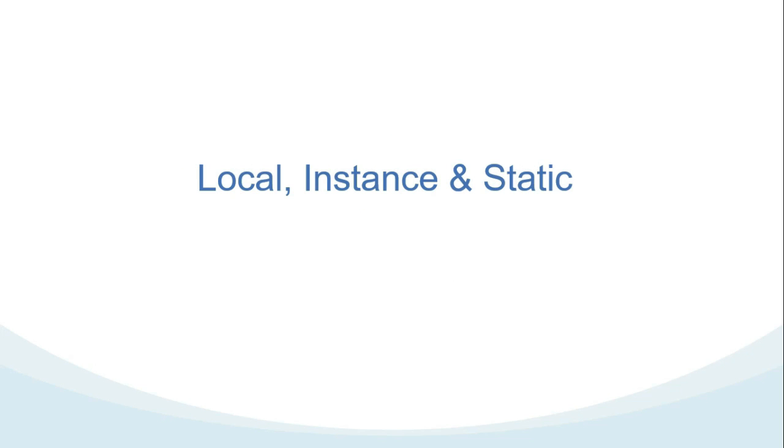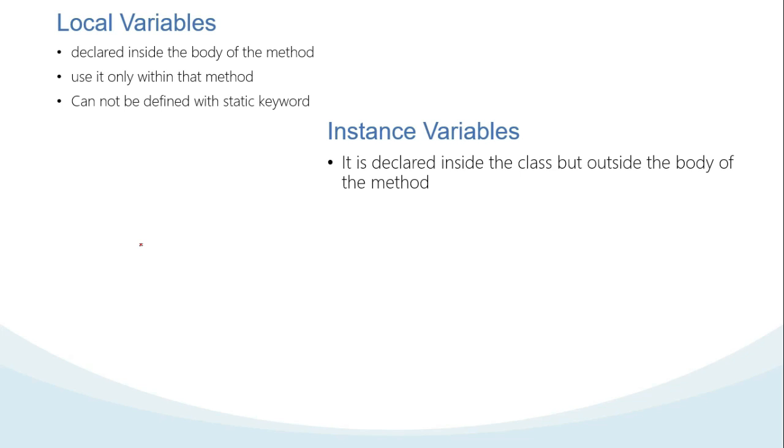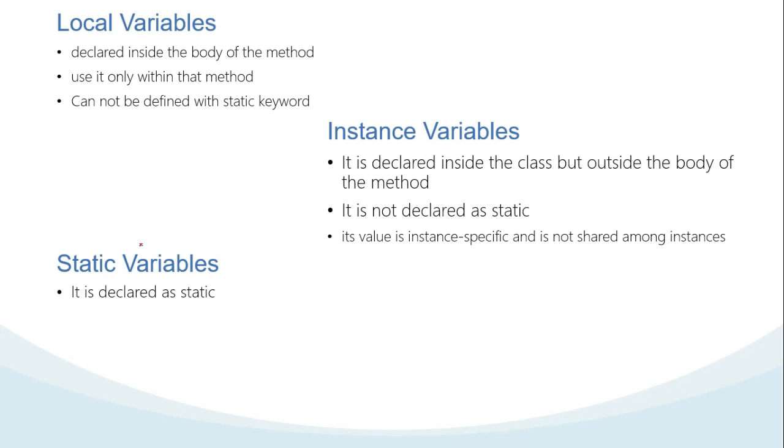There are three types of variables when it comes to programming: local, instance, as well as static variables. Local variables are declared inside the body of the method, used only within that method, and cannot be defined with static keyword. The second one, instance variable, is declared inside the class but outside the body of the method and is not declared as static. Its value is instance specific and is not shared among instances. The last one is static variables. It is declared as static, it cannot be local, and memory allocation for static variables happens only once when the class is loaded in the memory.